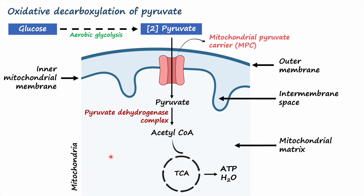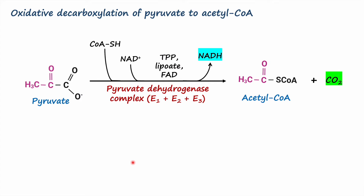One thing to remember is that pyruvate dehydrogenase complex is not a part of the TCA cycle, but it helps synthesize acetyl-CoA, which is an important substrate for the TCA cycle to synthesize ATP. The focus of this lesson is to learn how pyruvate is converted into acetyl-CoA and what is the role of pyruvate dehydrogenase complex in this reaction.